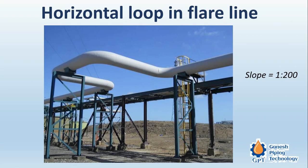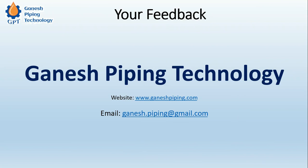This is the loop system of the flare. Flare lines cannot go in a horizontal loop directly on the pipe rack; they are installed on the adjacent side of the pipe rack because the flare line cannot be dropped down and brought back up, as that would create a dead pocket which is not allowed. A loop must be provided, and as shown in this image, it is a horizontal loop with a slope of 1:200.